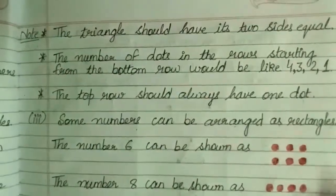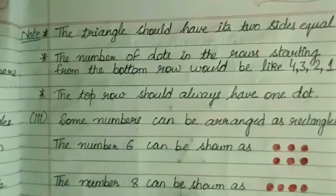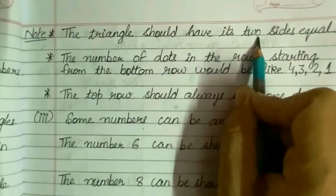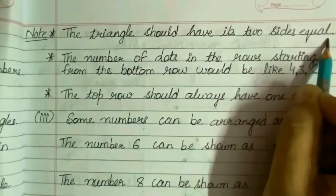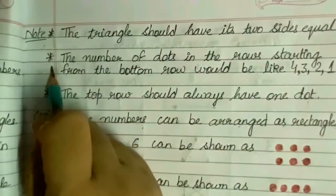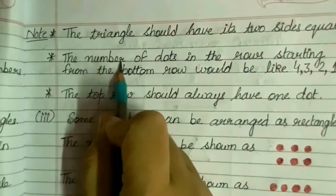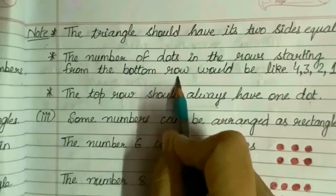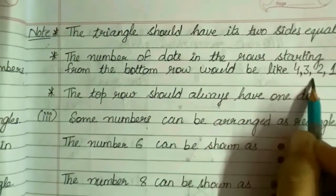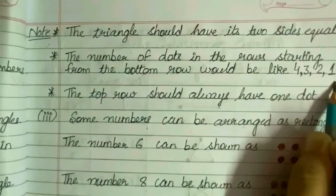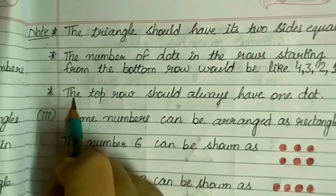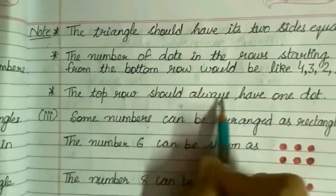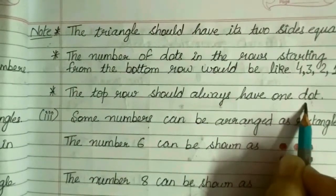From here we get some important notes. Note number one: the triangle should have its two sides equal. Note number two: the number of dots in the rows starting from the bottom row would be like four, three, two, one. Note number three: the top row should always have one dot.